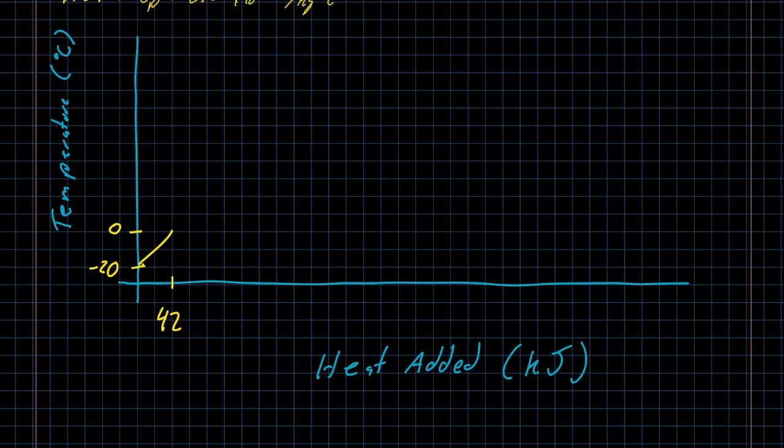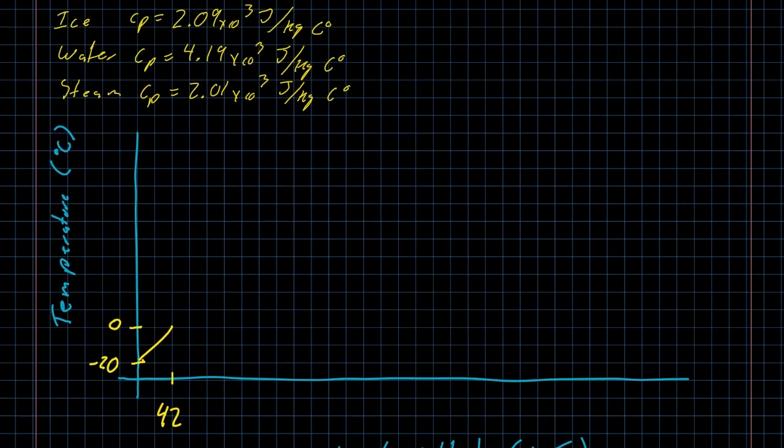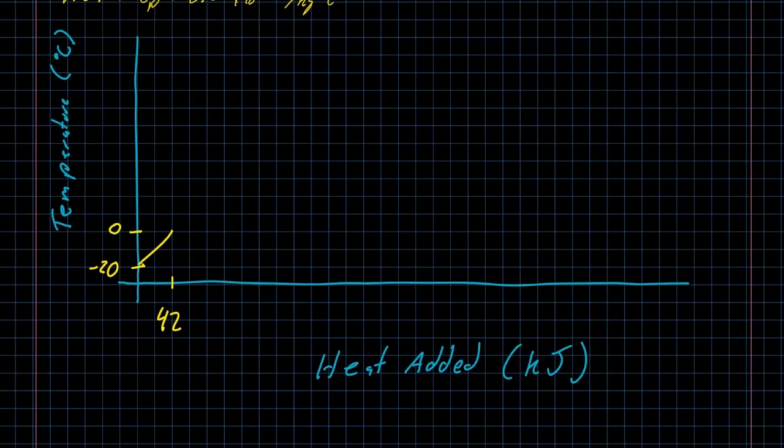Now that we have gotten the ice to zero degrees, it is still ice. We have to add more heat in order to melt the ice. The heat we need to add is the latent heat of fusion, 335 kilojoules per kilogram. We have one kilogram, so that's 335 kilojoules we need to add. Add that to the 42 kilojoules we have already added, and that's going to take us over here to 377 kilojoules. So up until that point we have ice. Once we reach that point, we now have water.